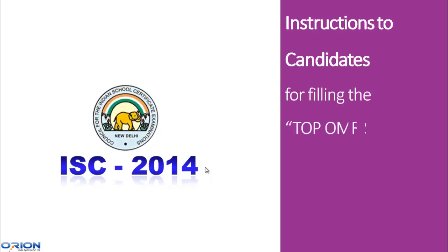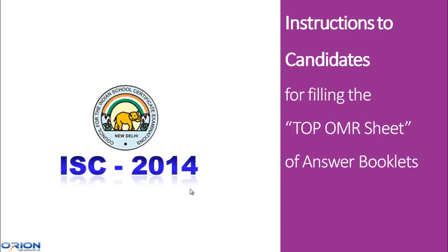As part of automating its examination procedures, CICE is introducing an Optical Mark Recognition System, or OMR, for ICSE and ISE examinations from the year 2014 onwards. All answer booklets will hereafter carry an OMR sheet at the top, which students are required to fill very carefully before starting the examination. Students are advised to take utmost care while filling these OMR sheets, because any mistake may result in marking the student as absent. The purpose of this presentation is to explain to students how they have to fill the OMR sheets.